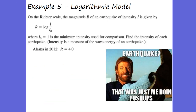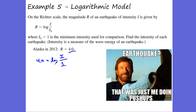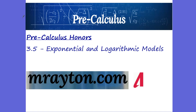One last example: a logarithmic model. This is how we measure earthquakes using the Richter scale, which is a logarithmic scale like the pH scale. In Alaska in 2012, there was a 4.0 earthquake: 4.0 = log(i/i₀), where i₀ = 1. The opposite of log base 10 is 10 to the power, so 10^4 = i/1, meaning the intensity was 1 × 10^4. That is your logarithmic model — exponential and logarithmic models are very applicable to real-world circumstances.